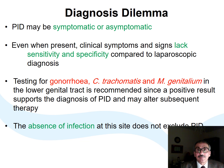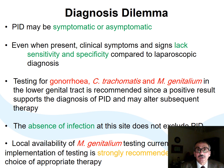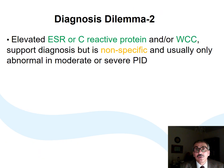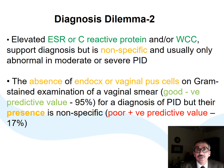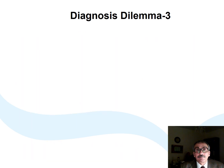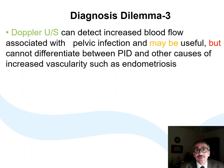Even if swabs are negative, pathogen-negative PID should still be suspected. Special antibiotics are needed for Mycoplasma genitalium. Inflammatory markers are only elevated in moderate and severe cases. The absence of pus cells is a good indicator negating the presence of disease; however, their presence has a poor positive predictive value. Pelvic ultrasound will be helpful only in the presence of pelvic masses or collection.